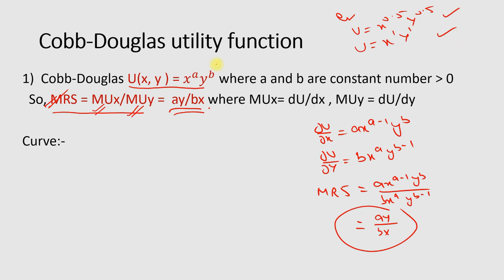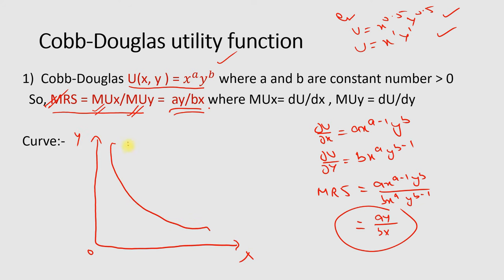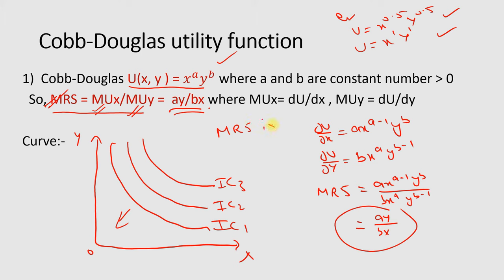If you plot a Cobb-Douglas utility function graph — for example, the square root of x times the square root of y — the indifference curve will be a rectangular hyperbola. It is strictly convex toward the origin, and here the marginal rate of substitution is diminishing.